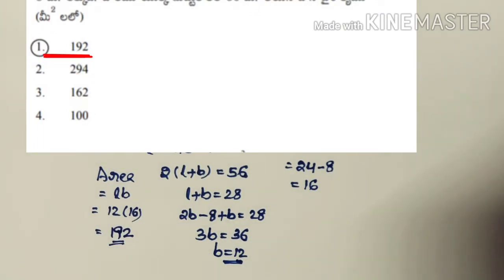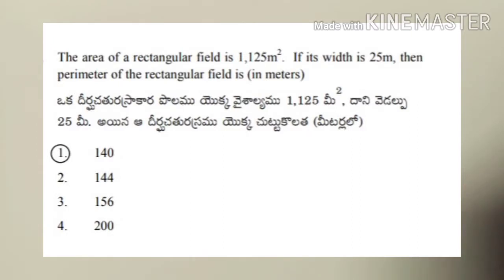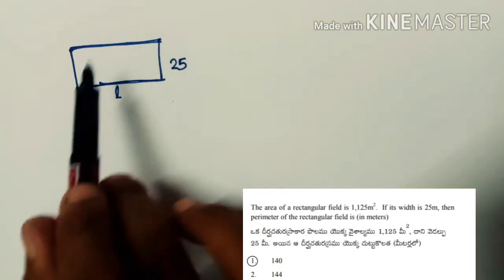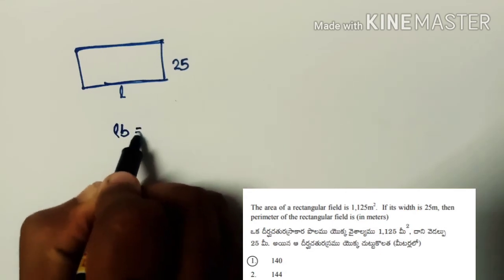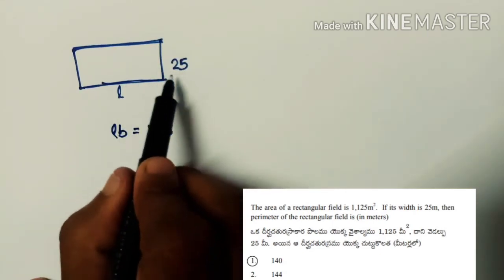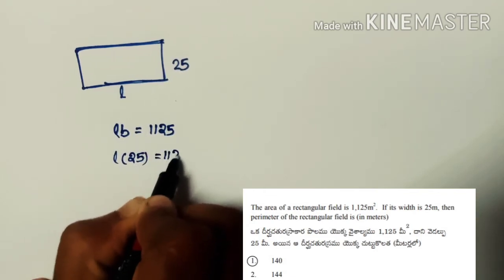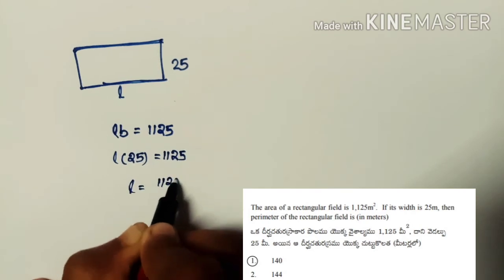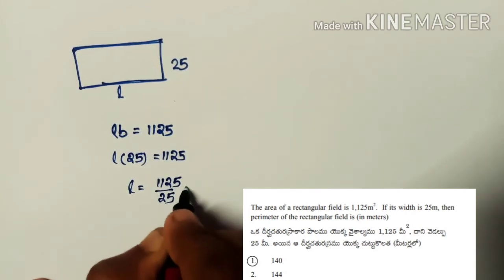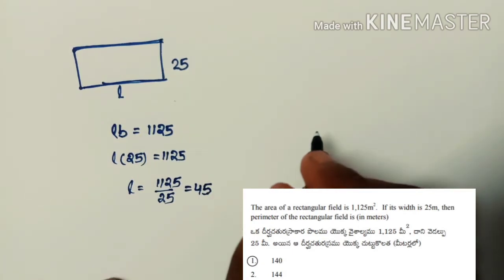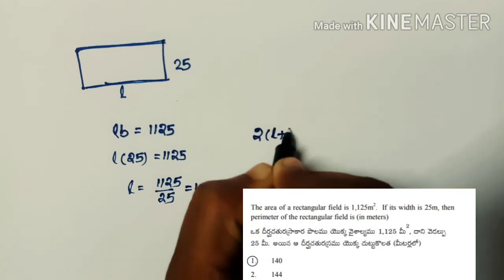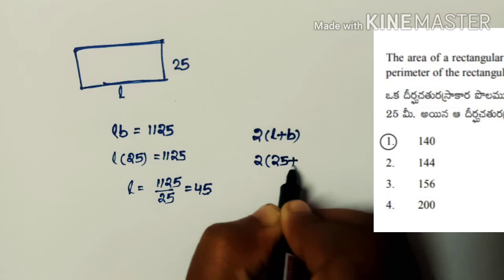Next problem: the area of a rectangular field is 1125 sq meters and its width is 25 meters. Find the perimeter. Area = l × b = 1125, so l × 25 = 1125, giving l = 45. Perimeter = 2(l + b) = 2(45 + 25) = 2 × 70 = 140 cm, which is the first option.